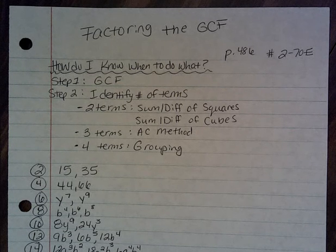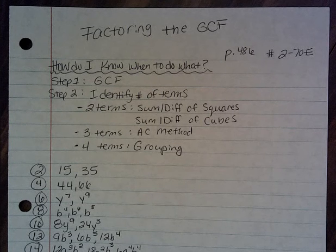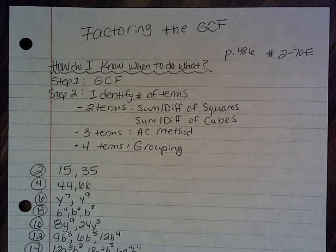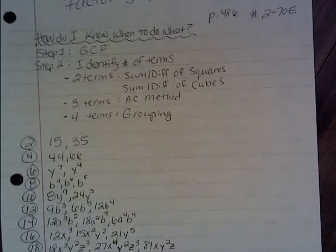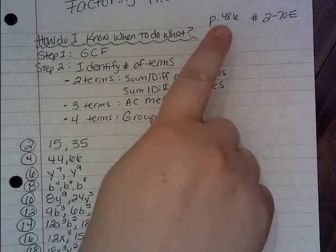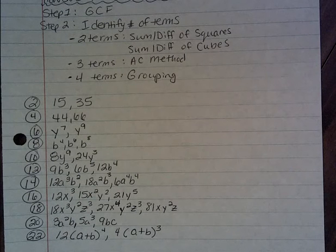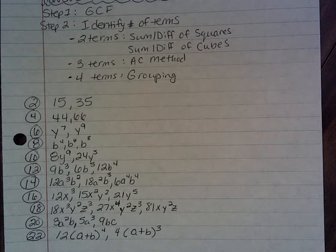For step two you identify the number of terms. We don't necessarily have to worry about that part just yet because we'll learn about all these different methods in the upcoming lessons. So for now we're just going to be concerned about the greatest common factor. We're looking on page 486 in your book, problems 2 through 70 even. Problems 2 through 22 are going to give us knowledge on how to find the greatest common factor — we aren't actually going to be factoring just yet.